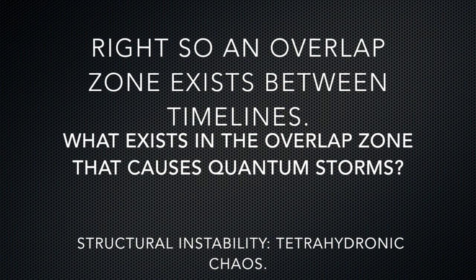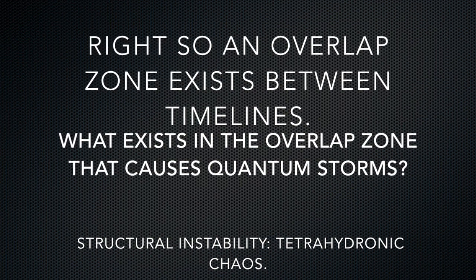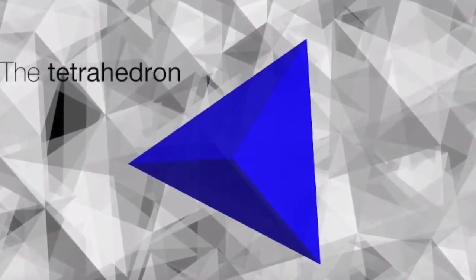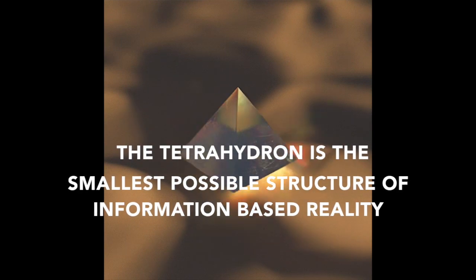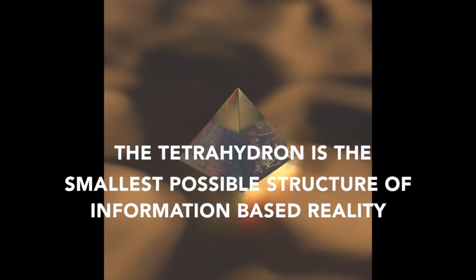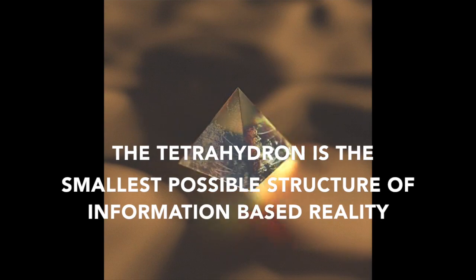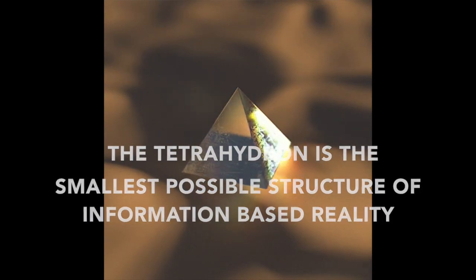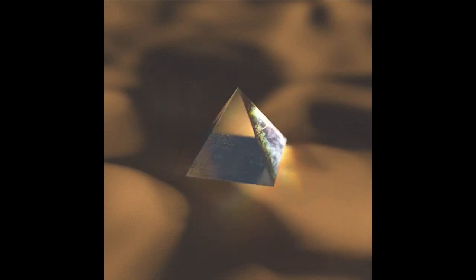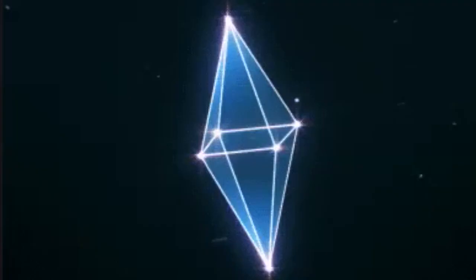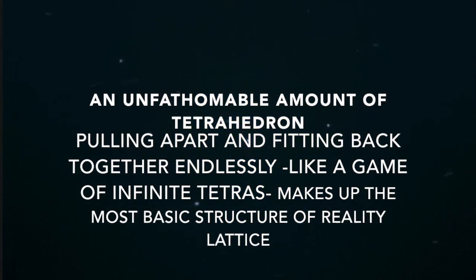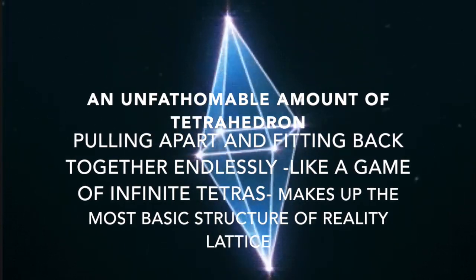So what's in the overlap zone that's causing these quantum storms? What is a tetrahedron? A tetrahedron is like a small pyramid-shaped structure. They unstack and re-stack on top of each other, kind of like quantum tetris — almost like a foundation, if it was a building, for other more complex shapes to be built on top of that.